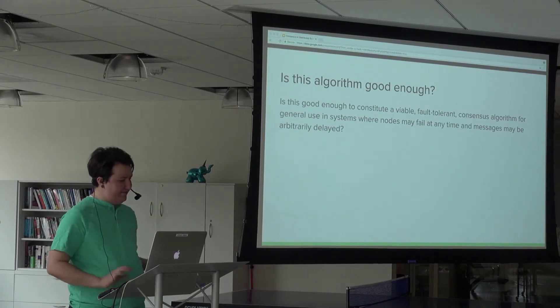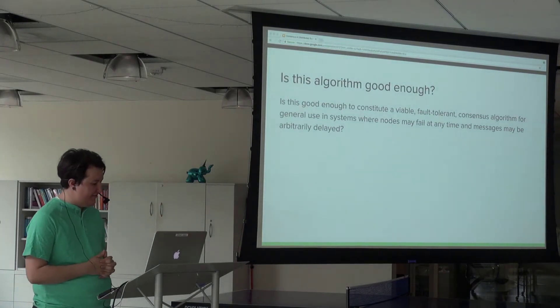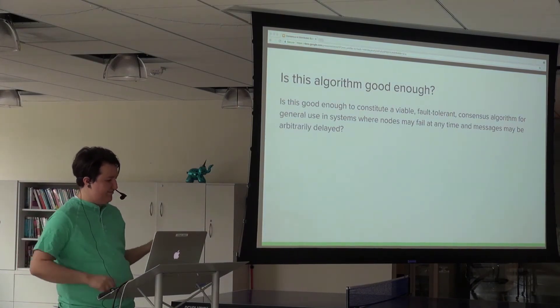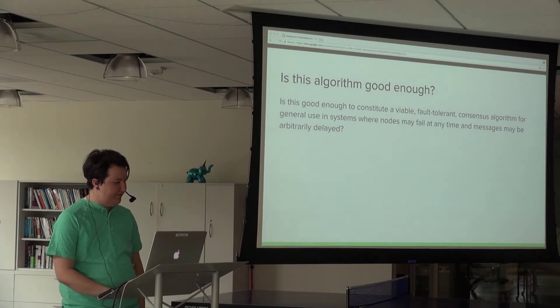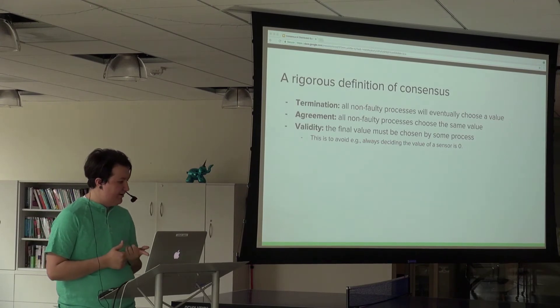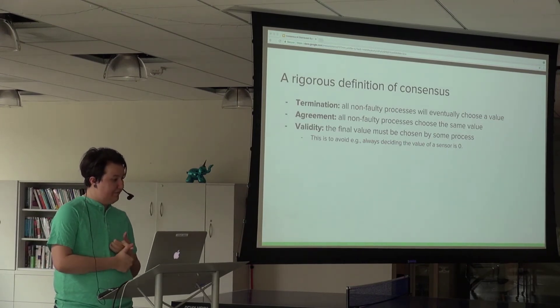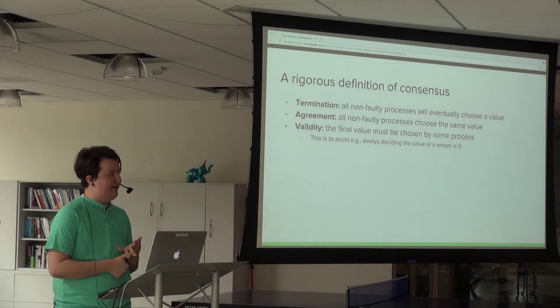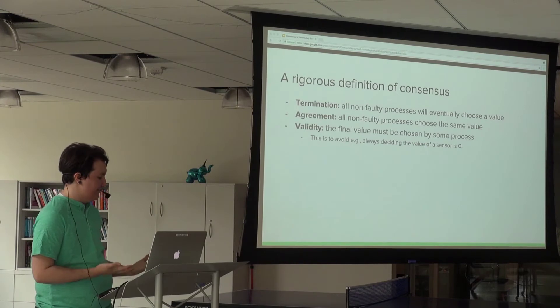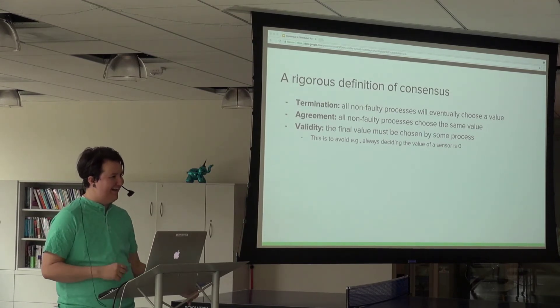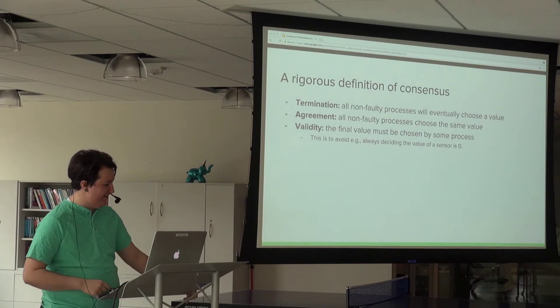In order to determine if this algorithm is good enough, we need to give some formal definitions of consensus and distributed systems. A rigorous definition says all non-faulty processes will eventually terminate, all will choose the same value, and the final value has to be chosen by some algorithm. We can't just say all values are zero because we don't care.